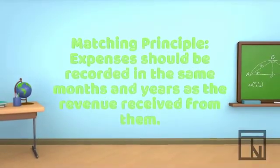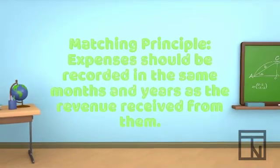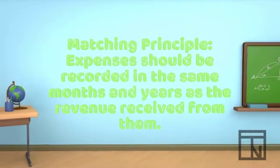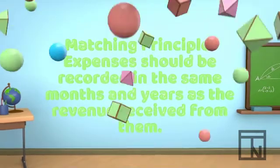One of the GAAP rules is known as the Matching Principle. The Matching Principle states that expenses should be recorded in the same months and years as the revenue received from them.